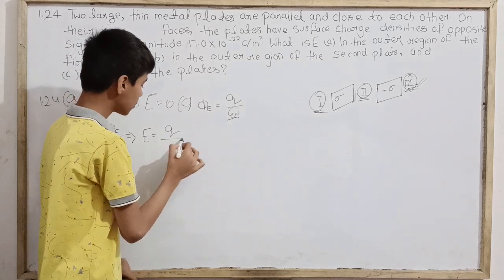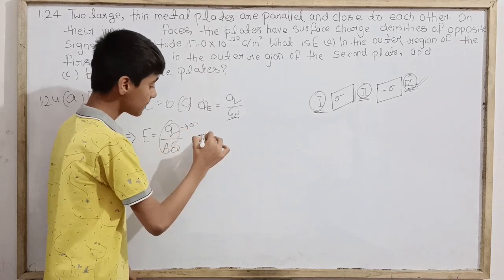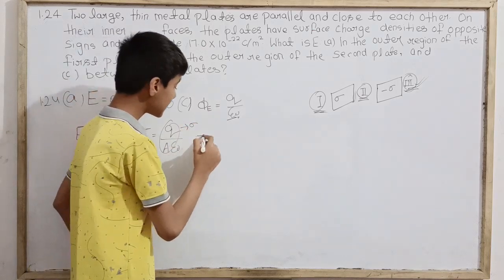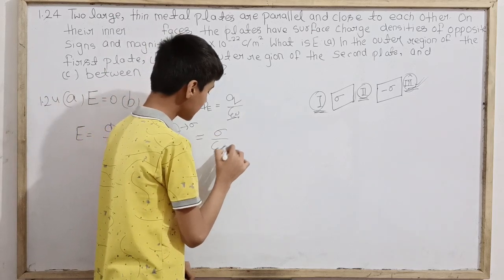This is Q over A epsilon naught, which can be written as sigma, the surface charge density. The charge over area in which charge exists gives us sigma over epsilon naught.